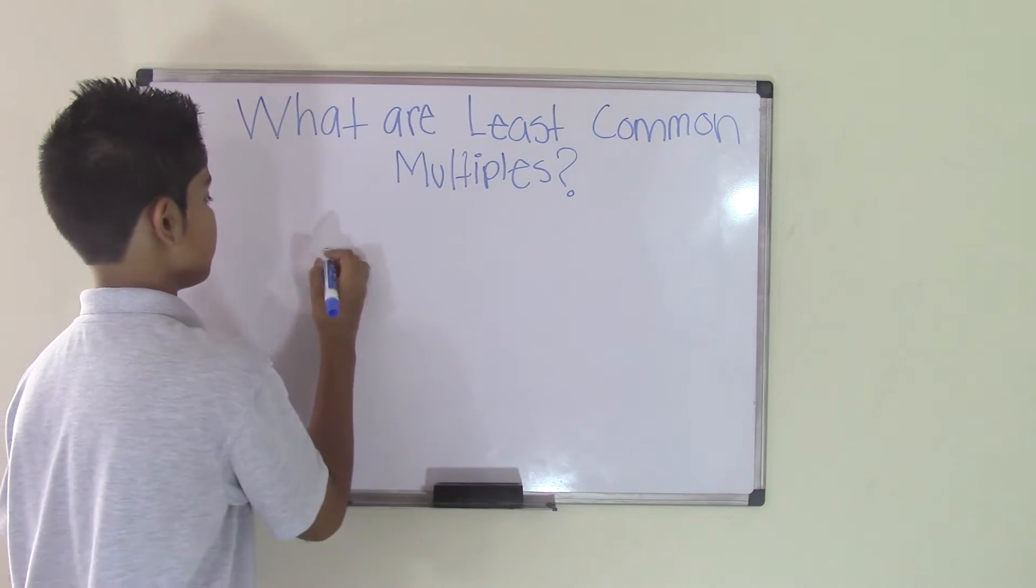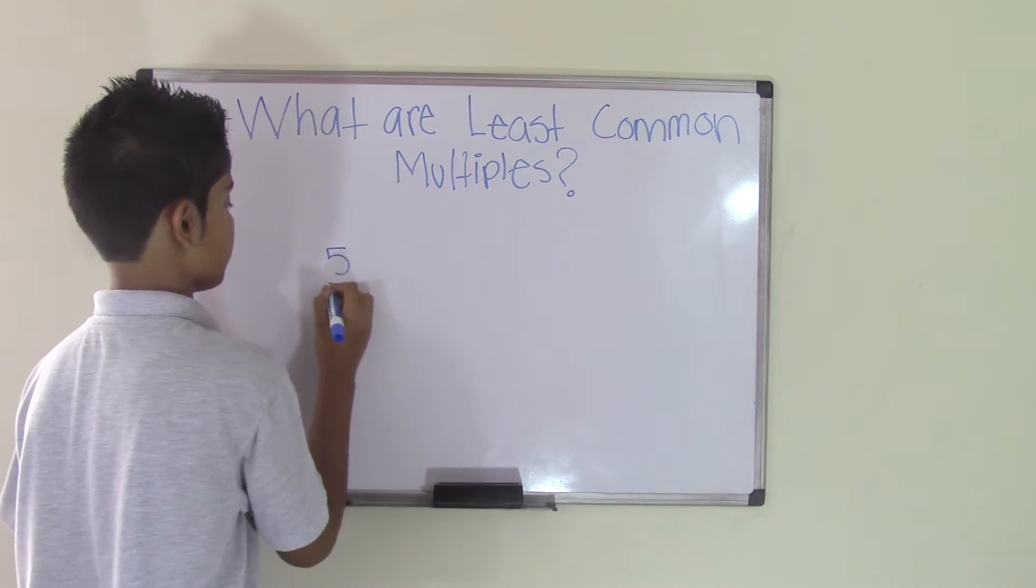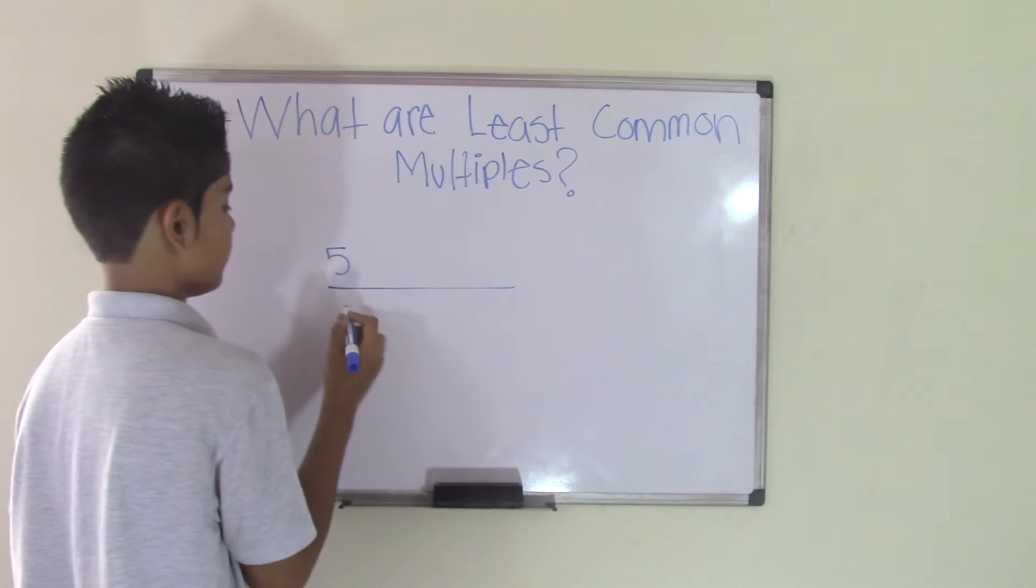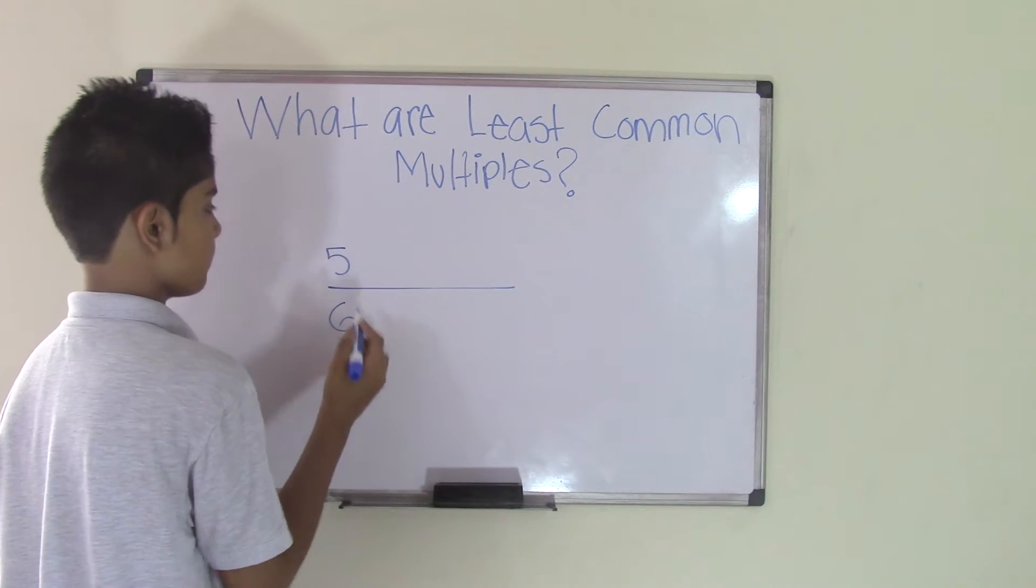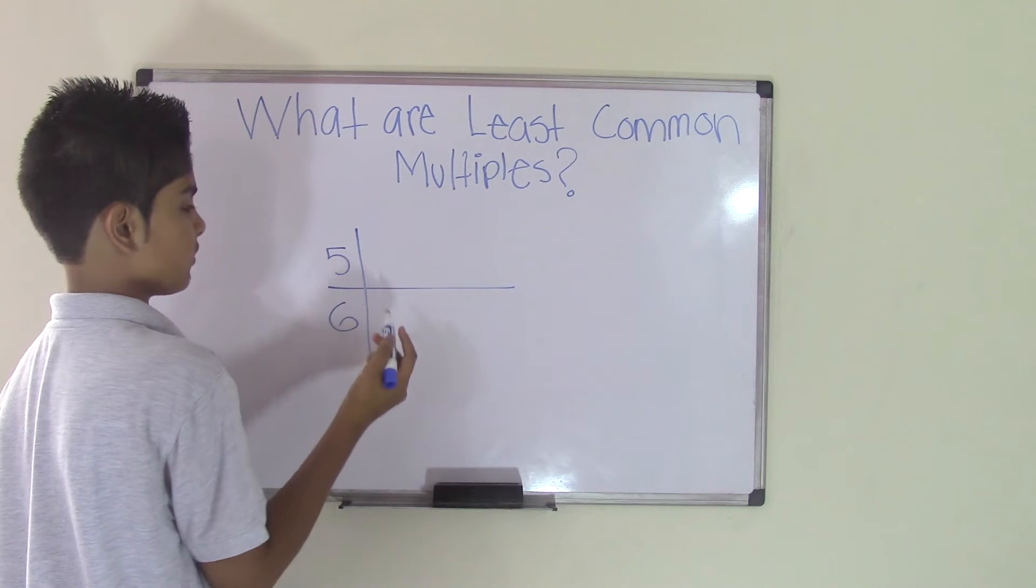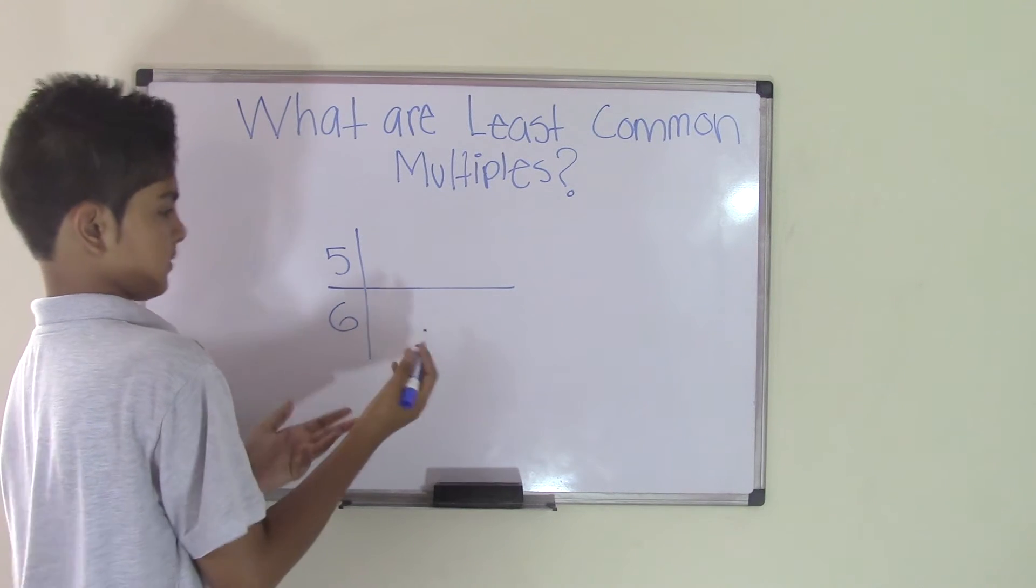For example, we have the numbers 5 and 6. Let's write the multiples of each number up to 5.